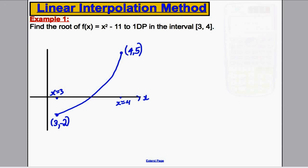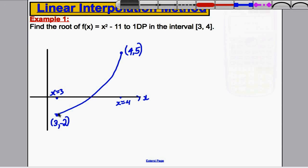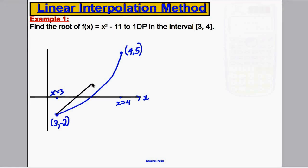Linear interpolation does the following. It imagines there is a straight line connecting (3, -2) and (4, 5). There is a straight line connecting this value here and this value here, between our change of sign.